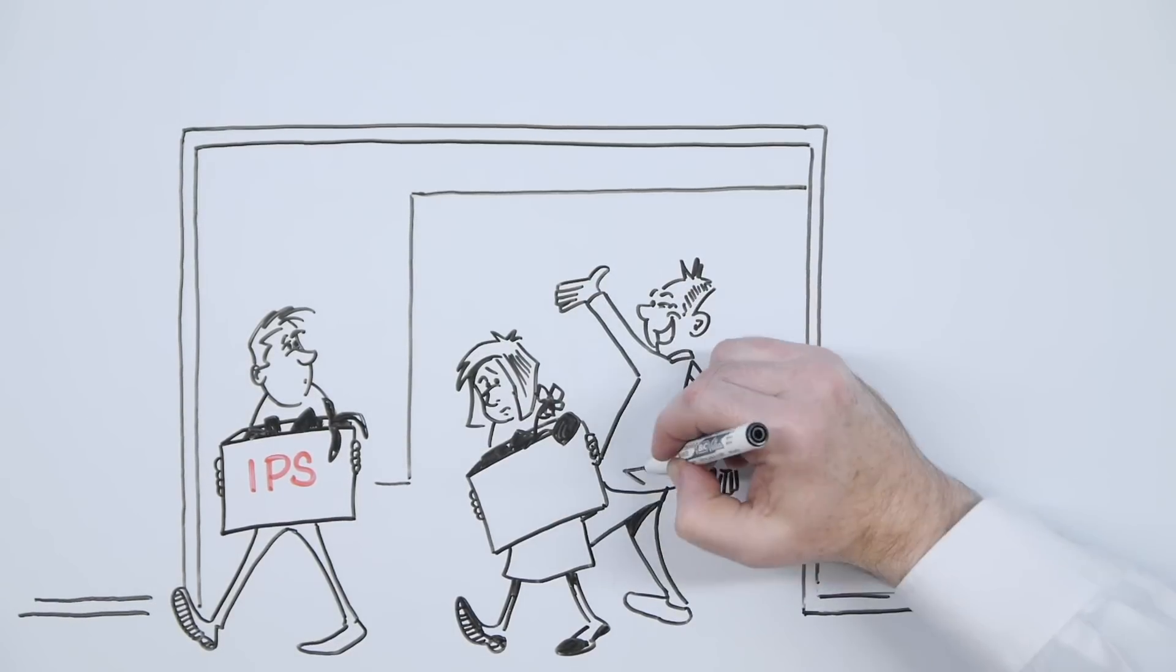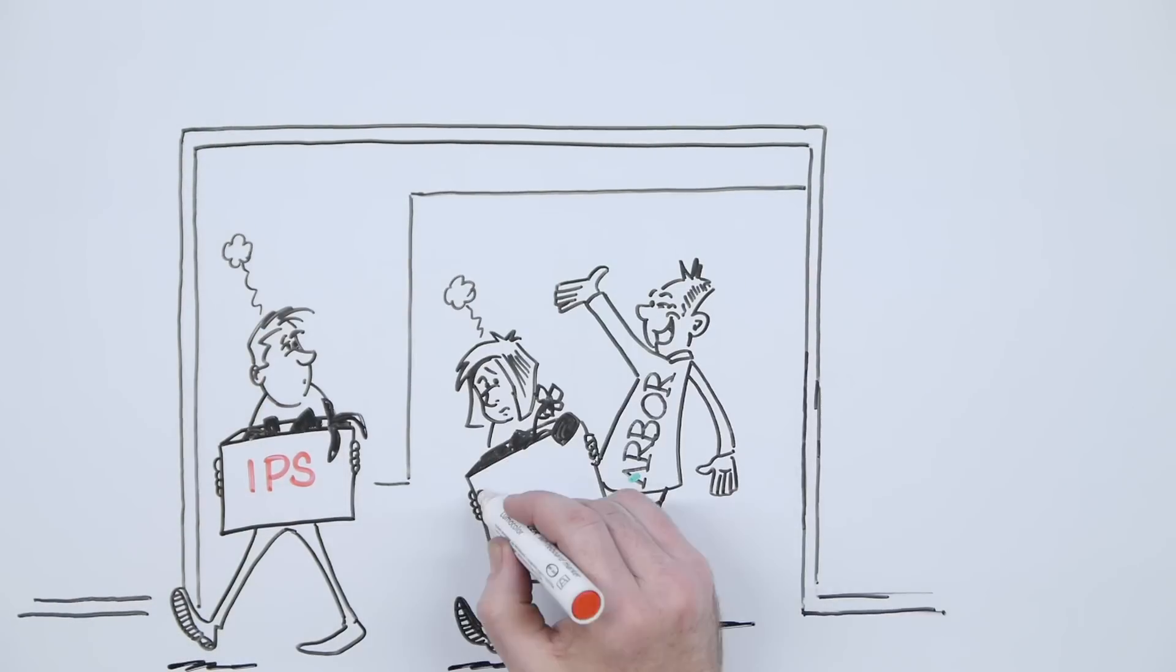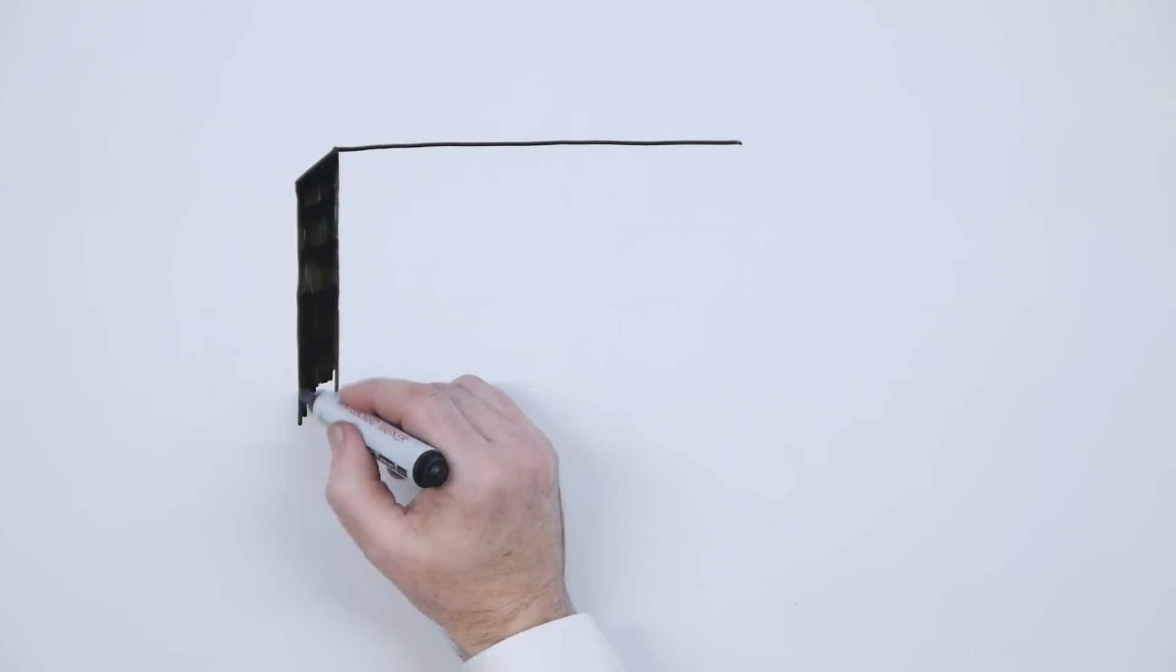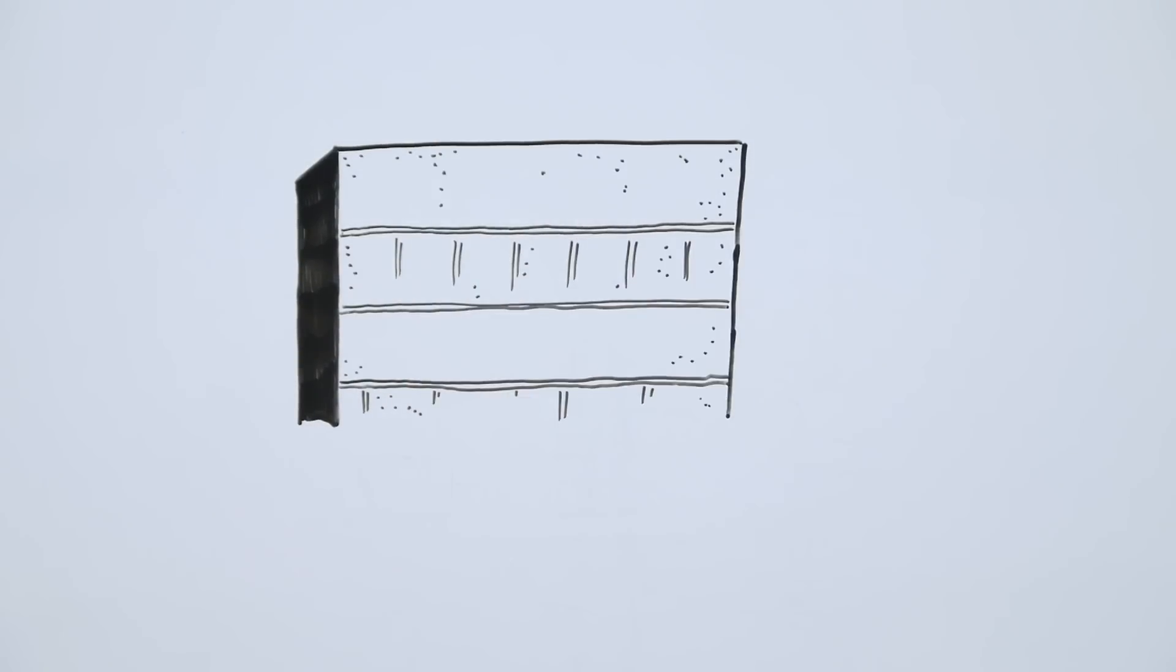Today, more than 60 different service providers offer a managed service to the enterprise built off and powered by Arbor technology. We also created an enterprise-focused, on-premise DDoS detection and mitigation solution, along with our own DDoS service called Arbor Cloud.